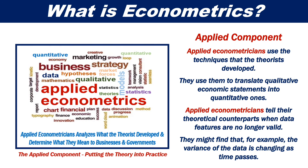Applied econometricians use the techniques that the theorists developed. They use them to translate qualitative economic statements into quantitative ones. Applied econometricians tell their theoretical counterparts when data features are no longer valid — they might find, for example, that the variance of the data is changing as time passes.